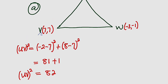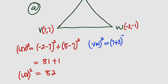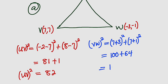Now let's move to the other leg, VW. VW² = (7 - (-3))² + (7 - (-1))² = (7 + 3)² + (7 + 1)² = (10)² + (8)² = 100 + 64 = 164. That is VW².